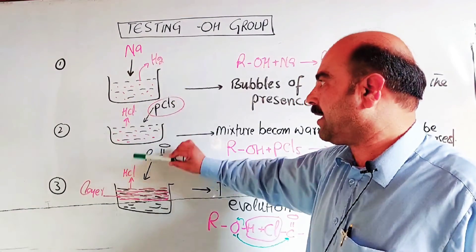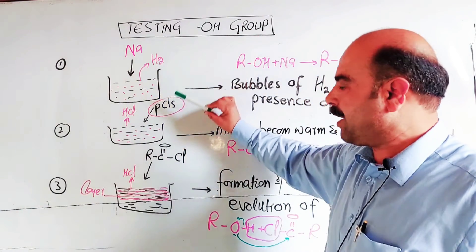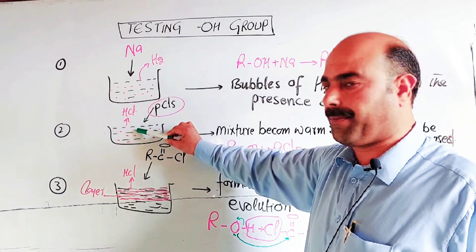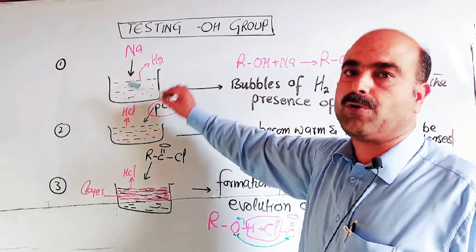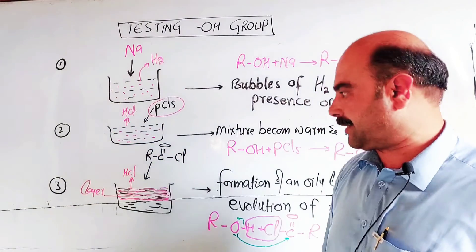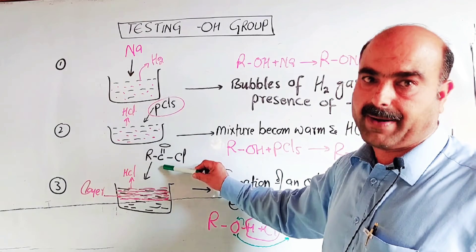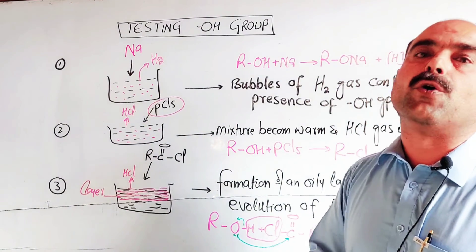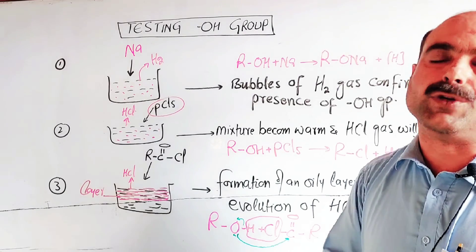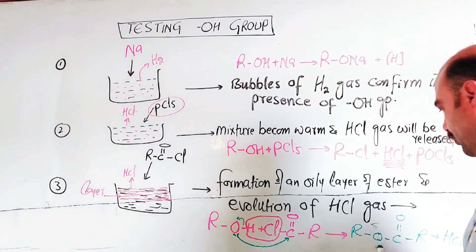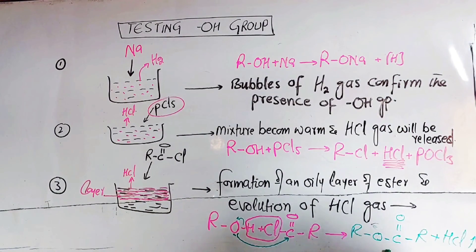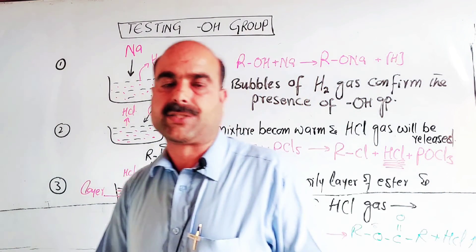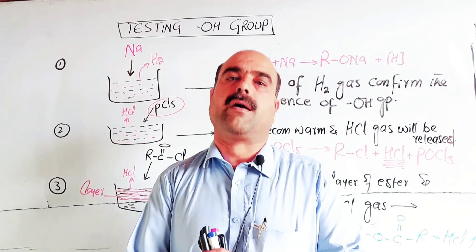First, sodium metal is tested — hydrogen gas is released. Second, phosphorus pentachloride is tested — the mixture becomes warm and HCL fumes are released. Third, acyl chloride is tested — HCL fumes are released. These were all the tests for the OH group in the given compound.